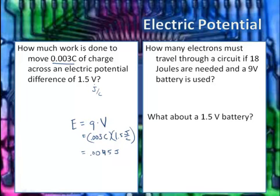Another question is how many electrons must travel through a circuit if we want 18 joules to be produced and we have a 9 volt battery? How many electrons is essentially asking about charge. You could use E = qV or rearrange this. The amount of charge that has to move is q = E/V. The energy desired is 18 joules and the voltage is 9 volts. If you divide 18 by 9, that's 2 coulombs worth of charge would have to move through this circuit in order to create 18 joules worth of energy.